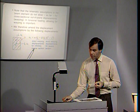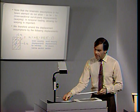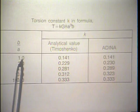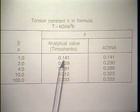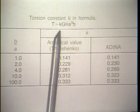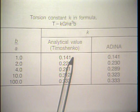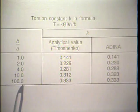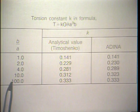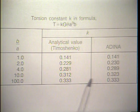Let's look at an example in linear elasticity. If we take a section and put it into torsion with b over a equal to 1, the analytical value given by Timoshenko for this constant is 0.141, and we obtain exactly that same value. For b over a very large — a very narrow section — we also get the exact result. In between, we have a small error that we believe is quite acceptable.